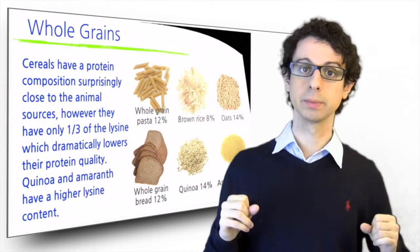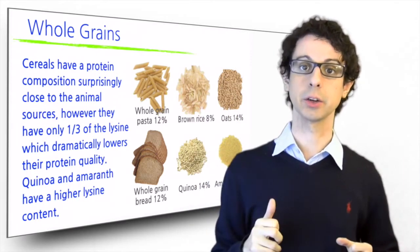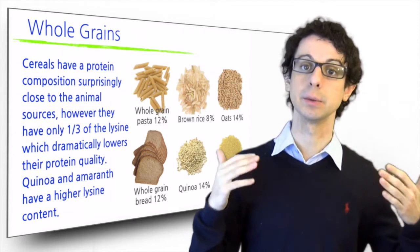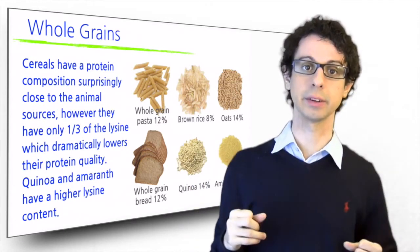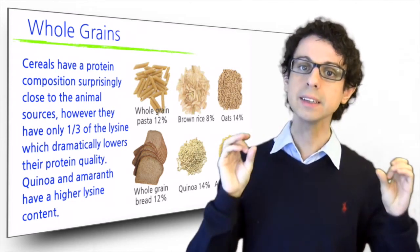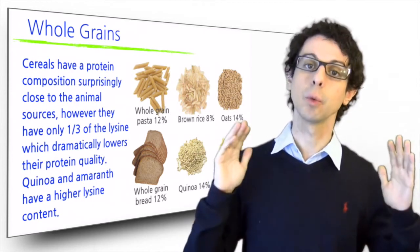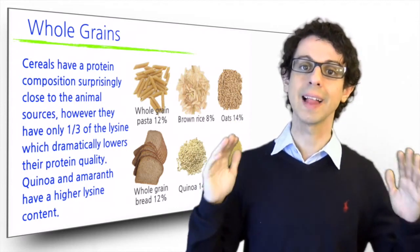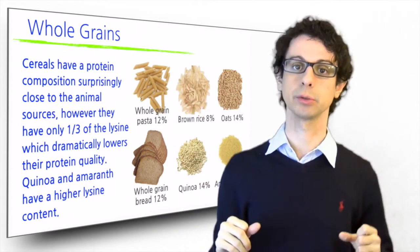We can get some from cereals. As long as they are whole grains they also have quite a lot of protein. Not as much as nuts and seeds but keep in mind that we eat more. A serving of pasta is of course bigger than a serving of sunflower seeds. They also have a composition that's surprisingly close to the animal sources of protein. However they have one big problem. They have only one third of the lysine we need and this dramatically lowers their protein quality.